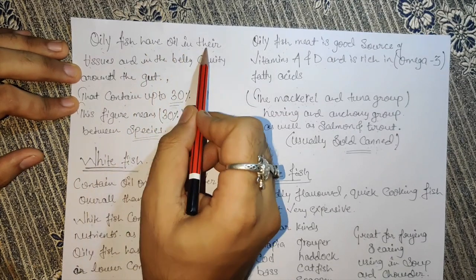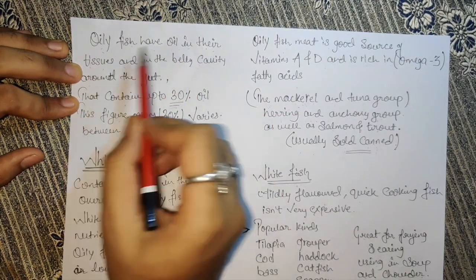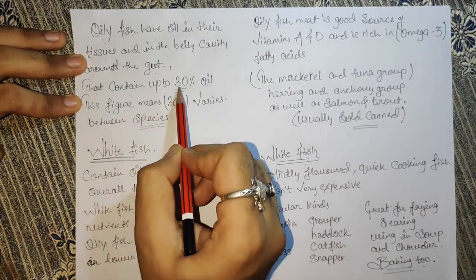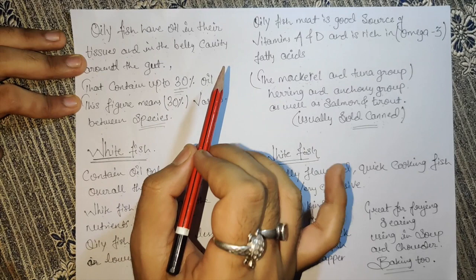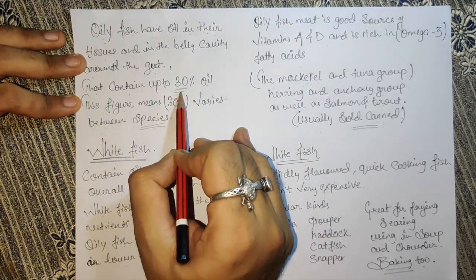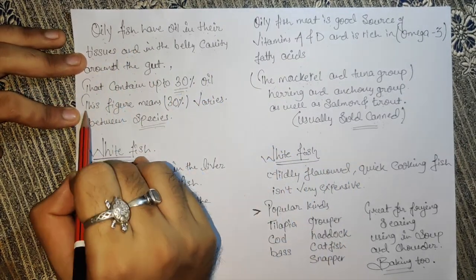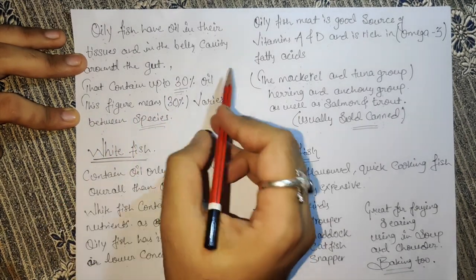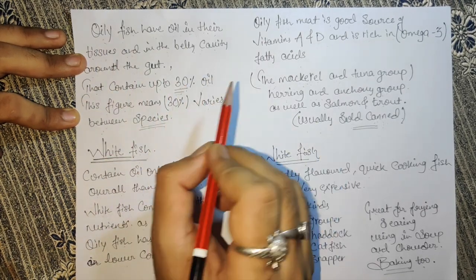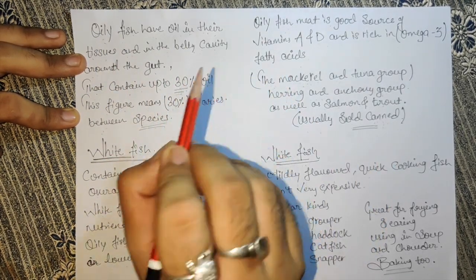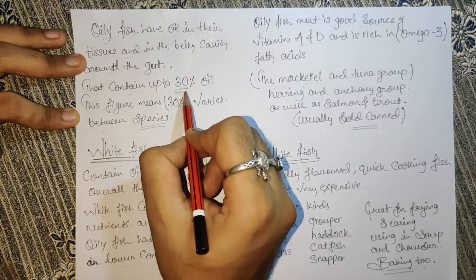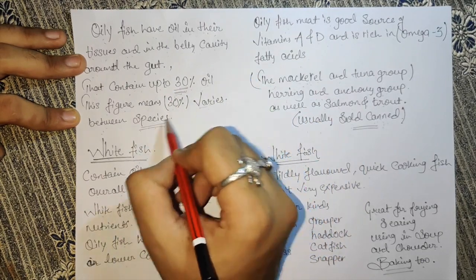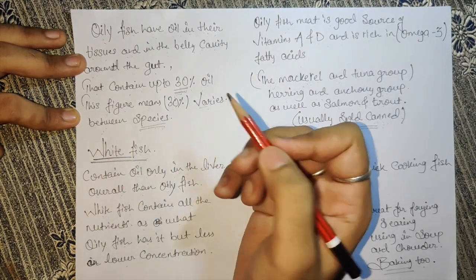Oily fish have oil in their tissue and in the belly cavity around the guts, containing up to 30% oil. However, this 30% figure varies between species — so sometimes it may be less than 30% or more than 30%, depending on the different type of fish species.